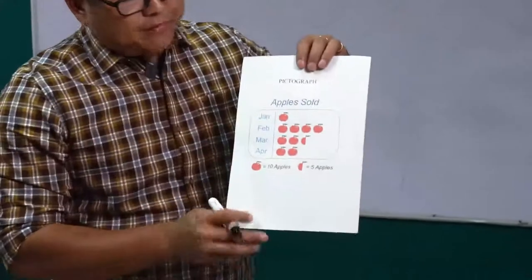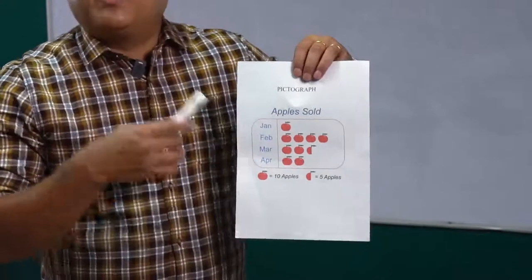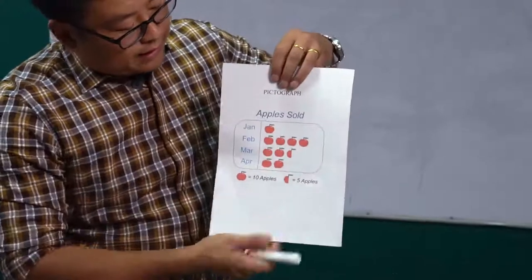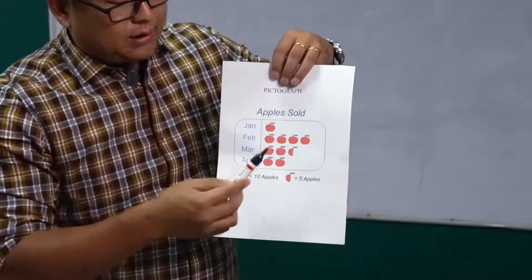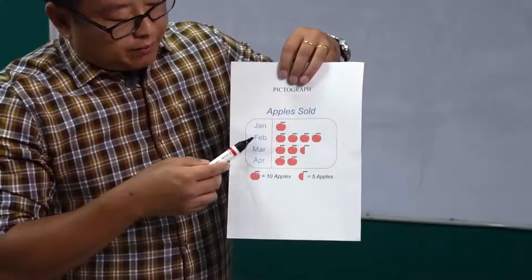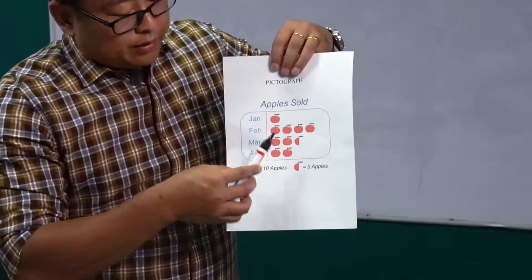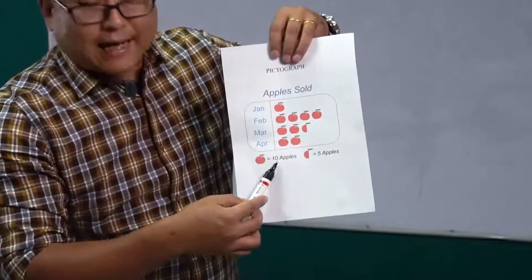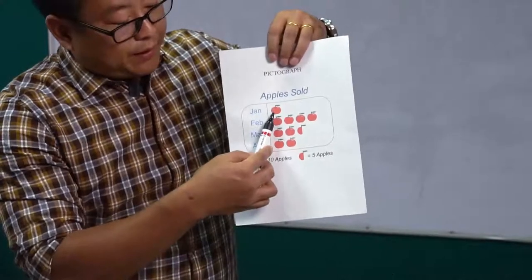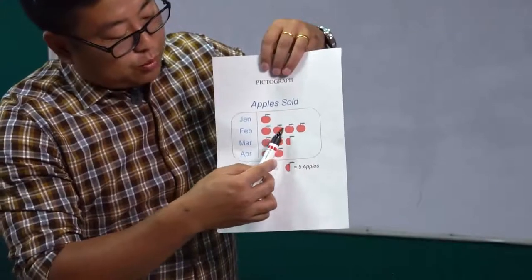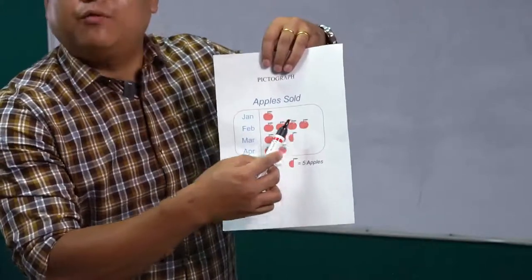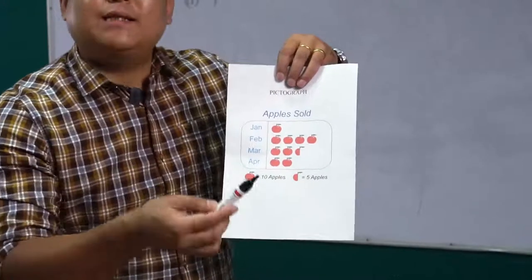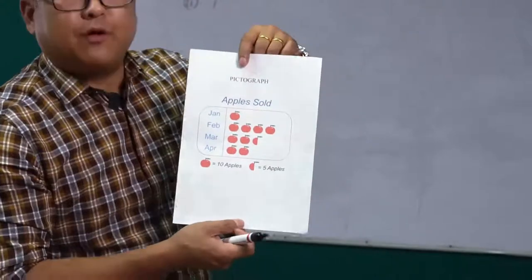A pictograph generally looks like this, where we use pictures to denote and show data. The example we have taken is apples sold — how many apples were sold in January, February, March, and April. There is an apple shown here, and this single apple denotes 10 apples. So if I show one apple, it means 10 apples; two apples means 20; four apples means 40. If half an apple is shown, it means five apples, because half of 10 is five.